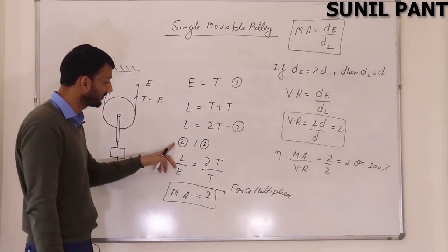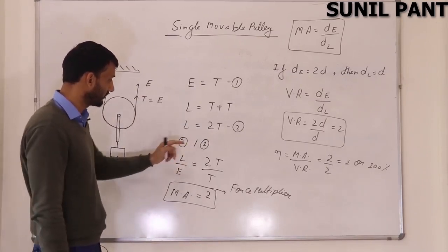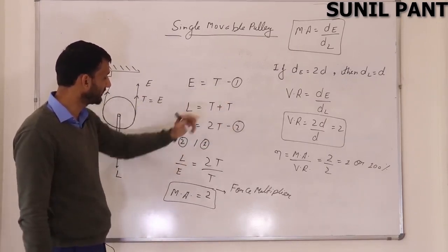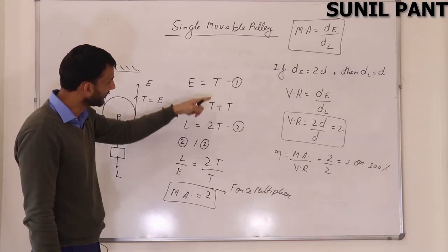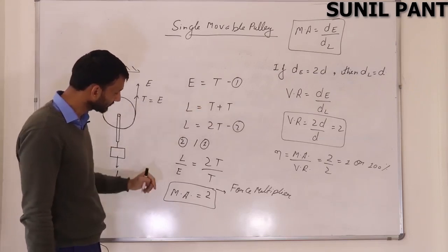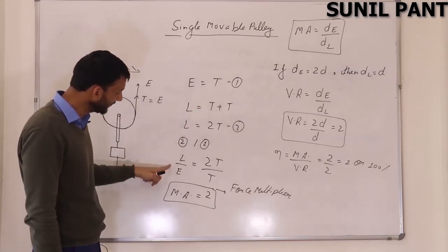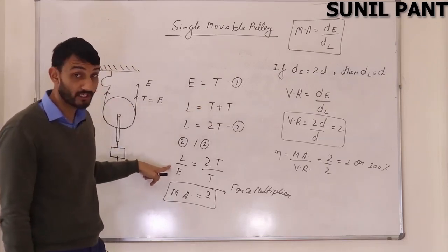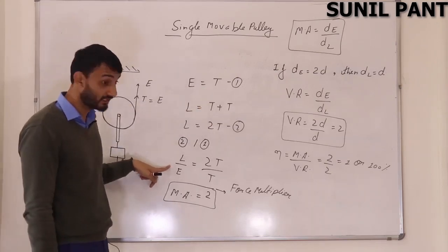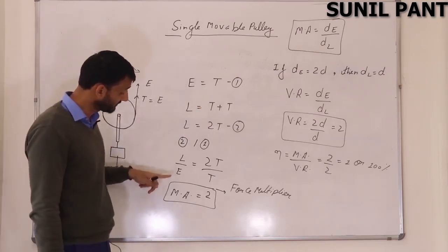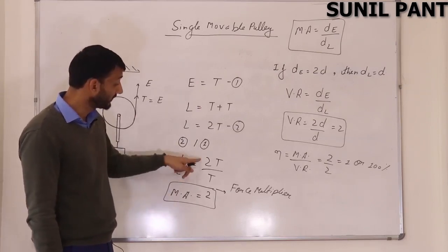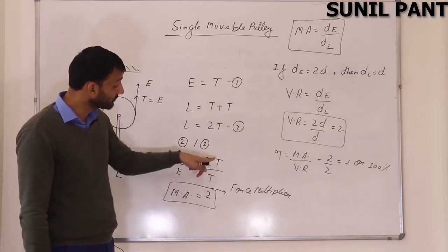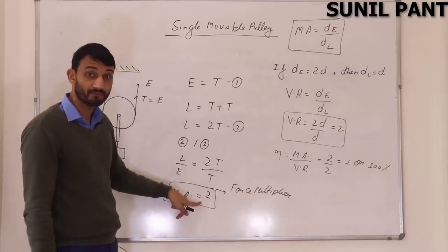We divide equation two by equation one. L upon E equals 2T upon T. L upon E we know is mechanical advantage, so MA equals 2T upon T, and T cancels out, giving MA equals 2.